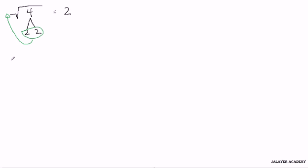Let's try another easy one. 9. 9 is 3 times 3. So we can circle these two 3's. We've paired them up and we can take them out. And there's nothing left inside. 3.